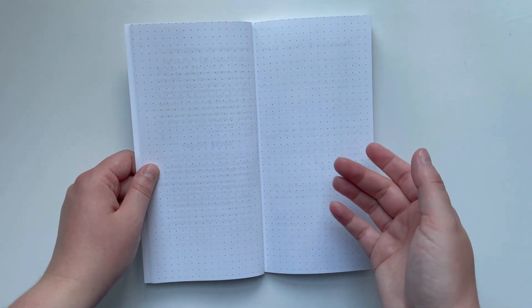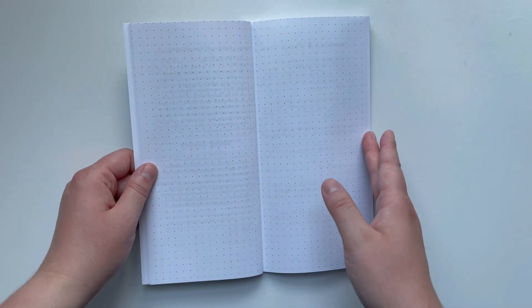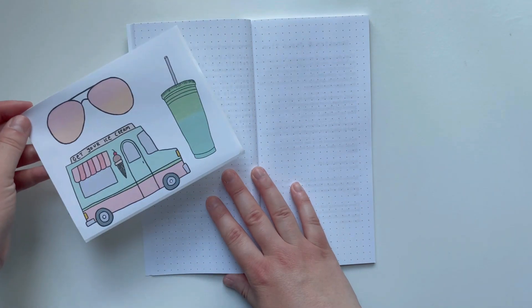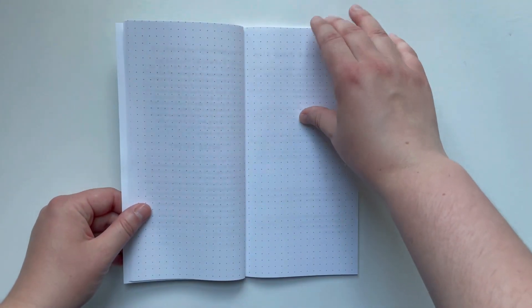And then between each devotion are dot grid pages, and so you can use this for additional note-taking or scripture writing, or you can use the really cute printables that come with the kit on these pages to decorate, write prayers, and continue studying.